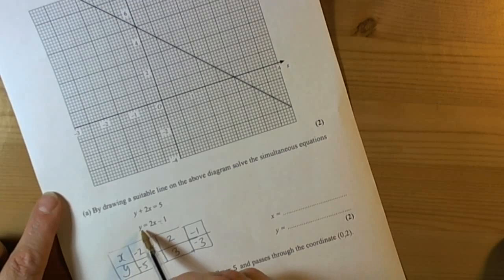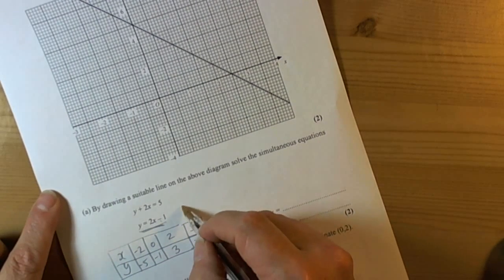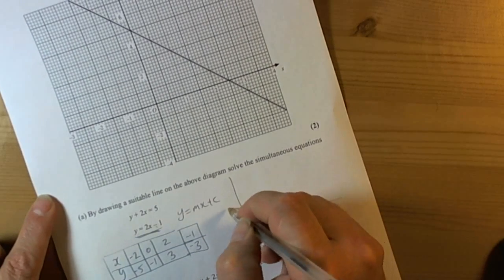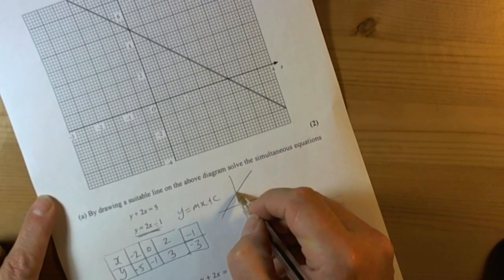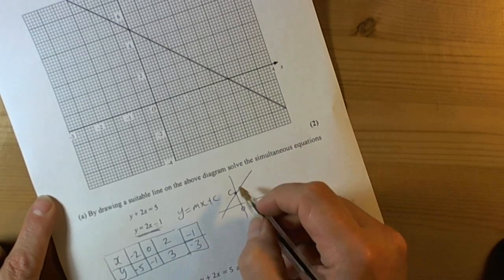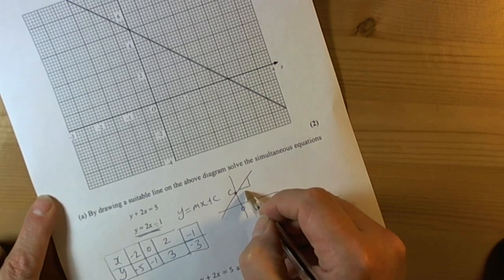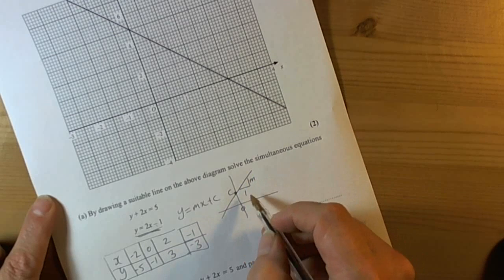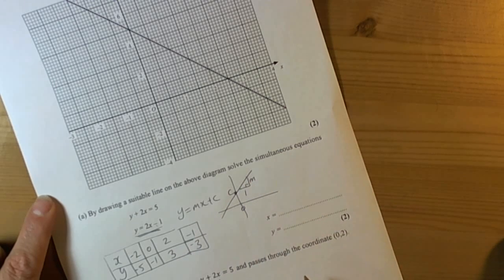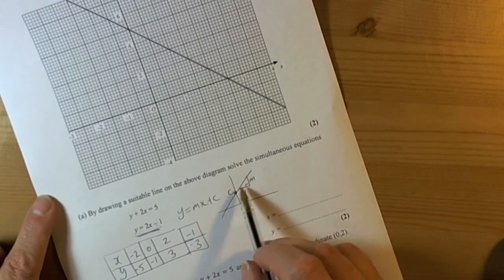A quicker way, if the graph is written in the format of the standard y equals mx plus c, where c is the intercept point when x is 0, and the gradient of the line, how steep it is, is always for every one on the x scale the gradient is the value we go up to meet the line again. So we could use this technique.